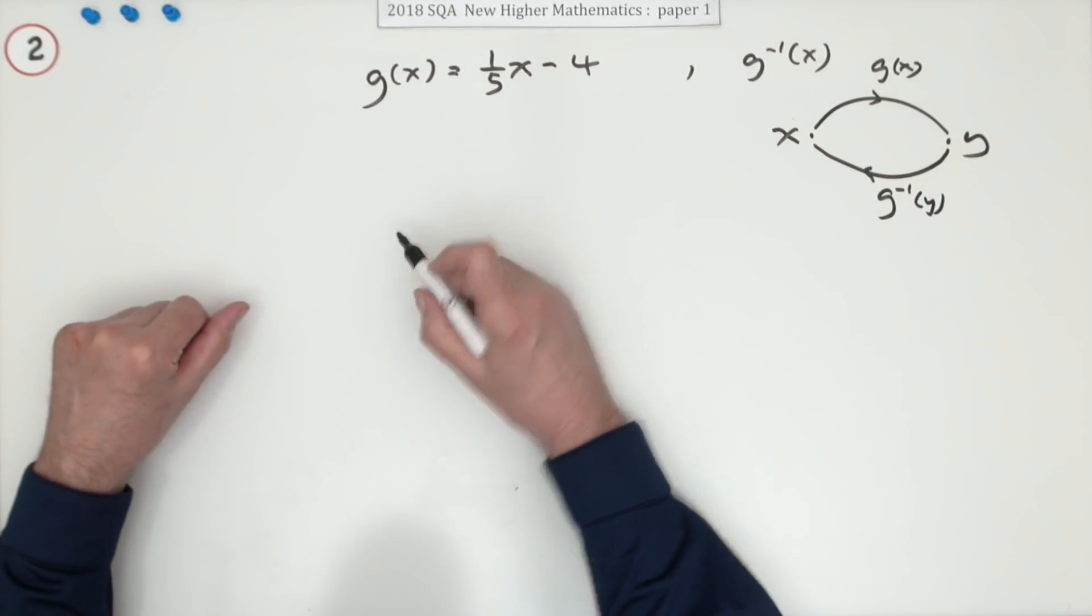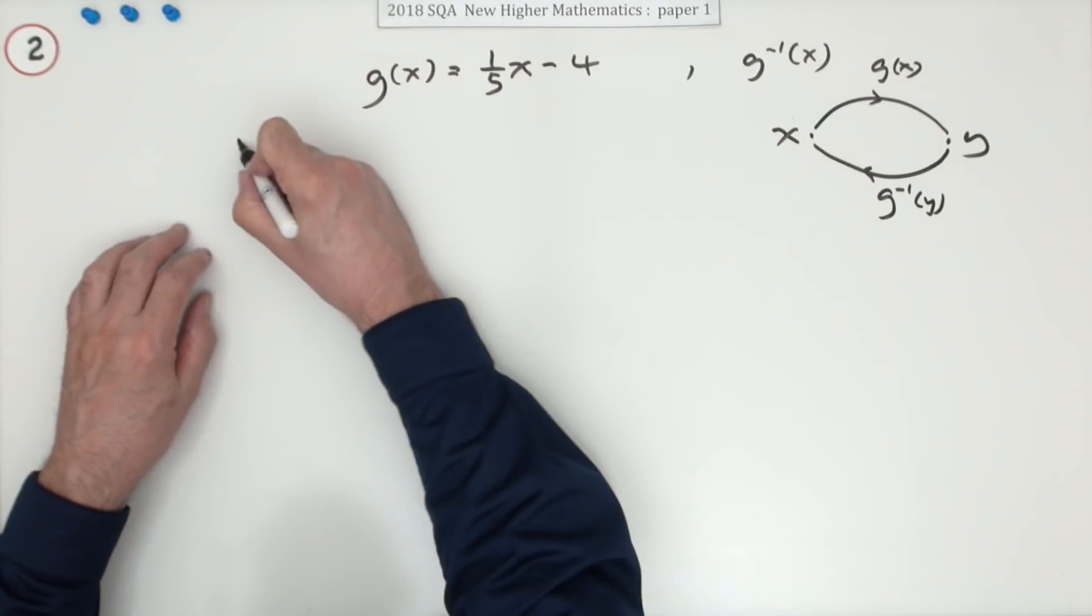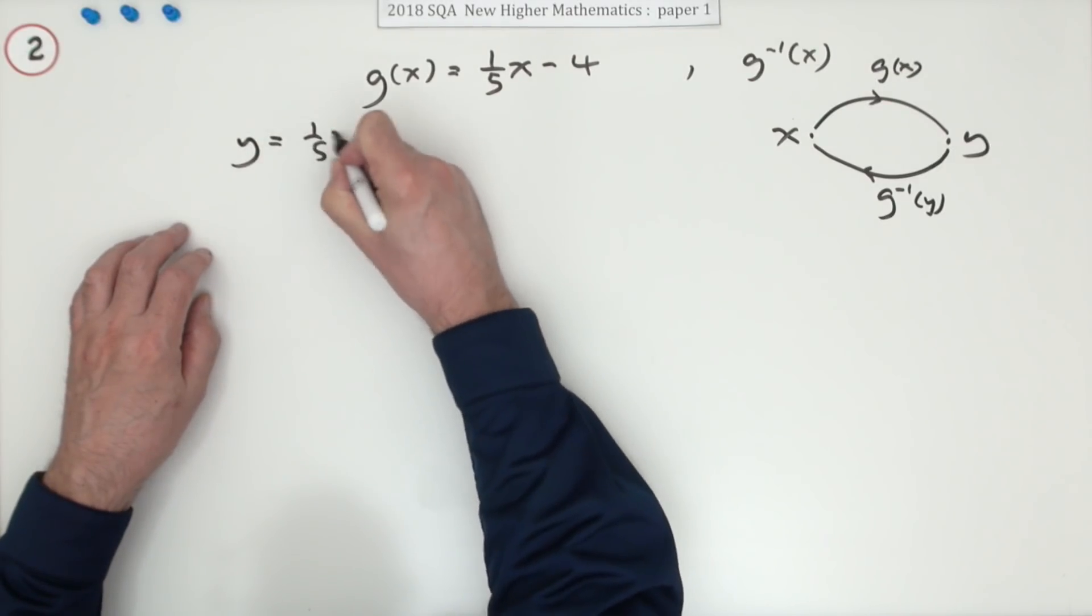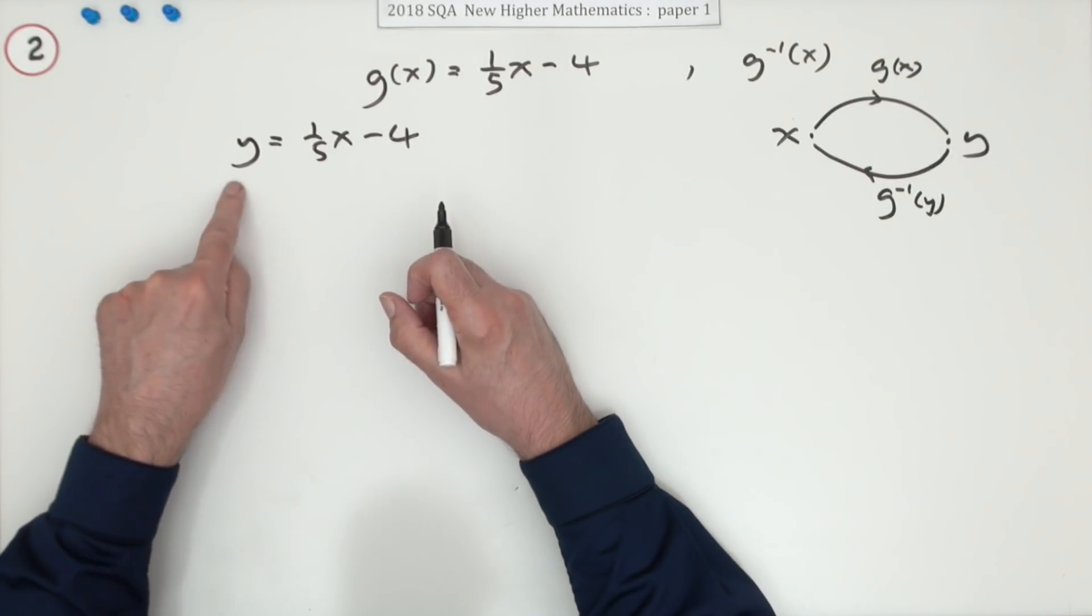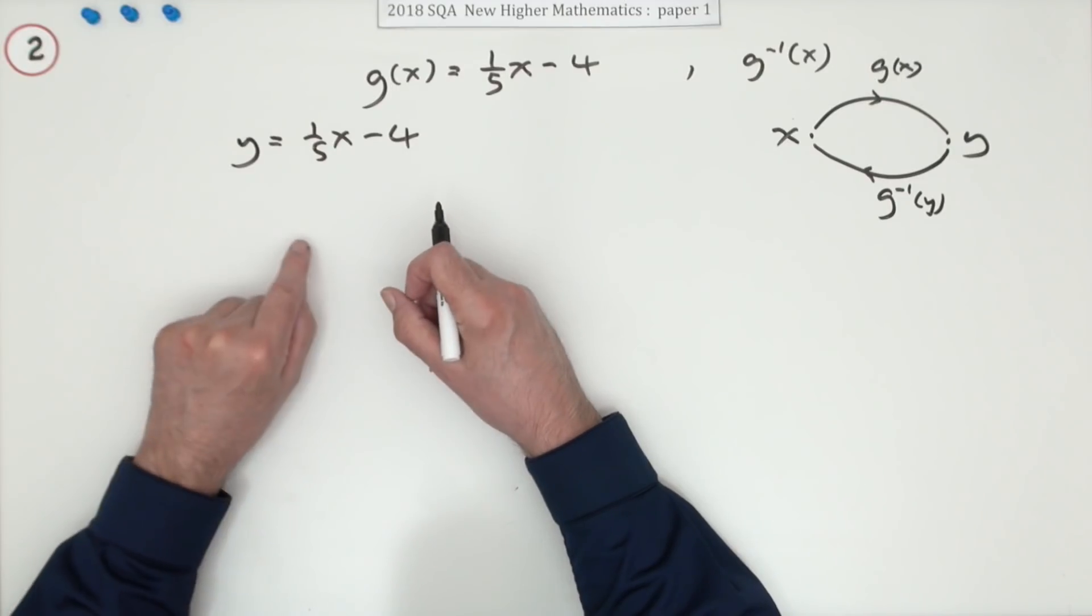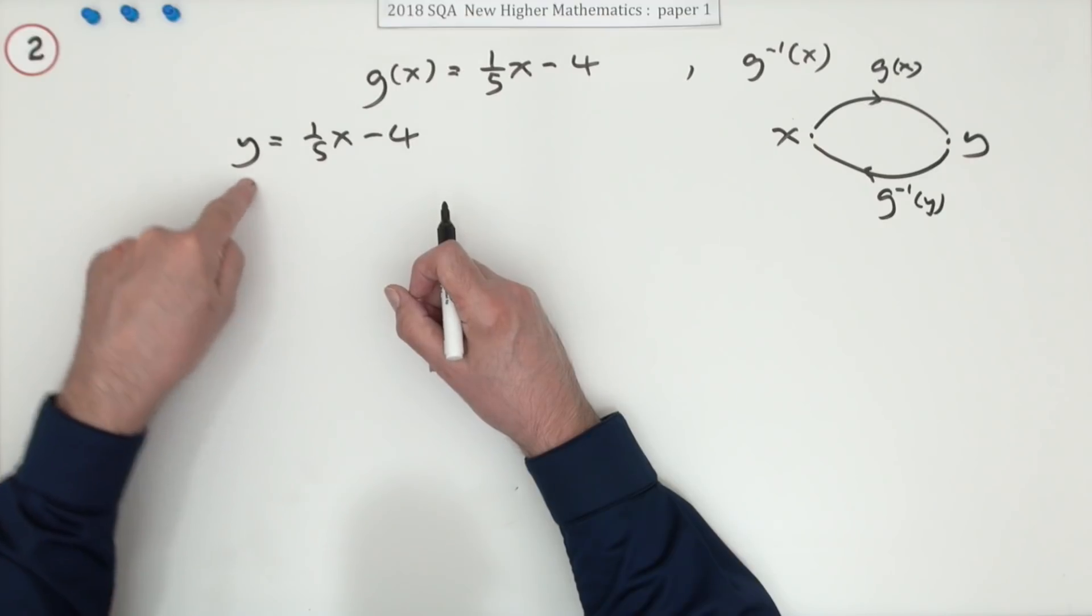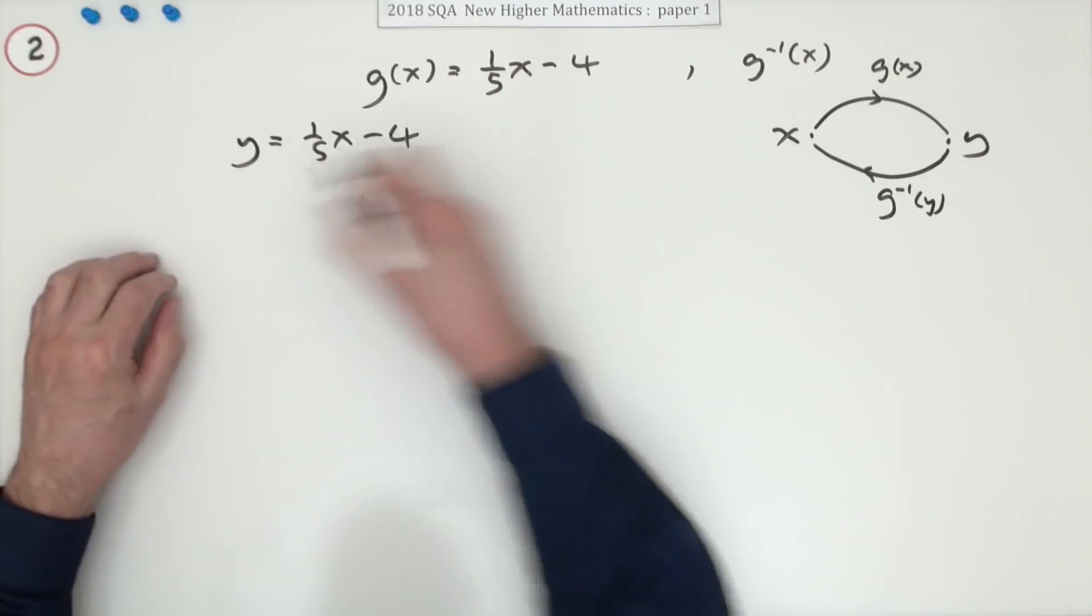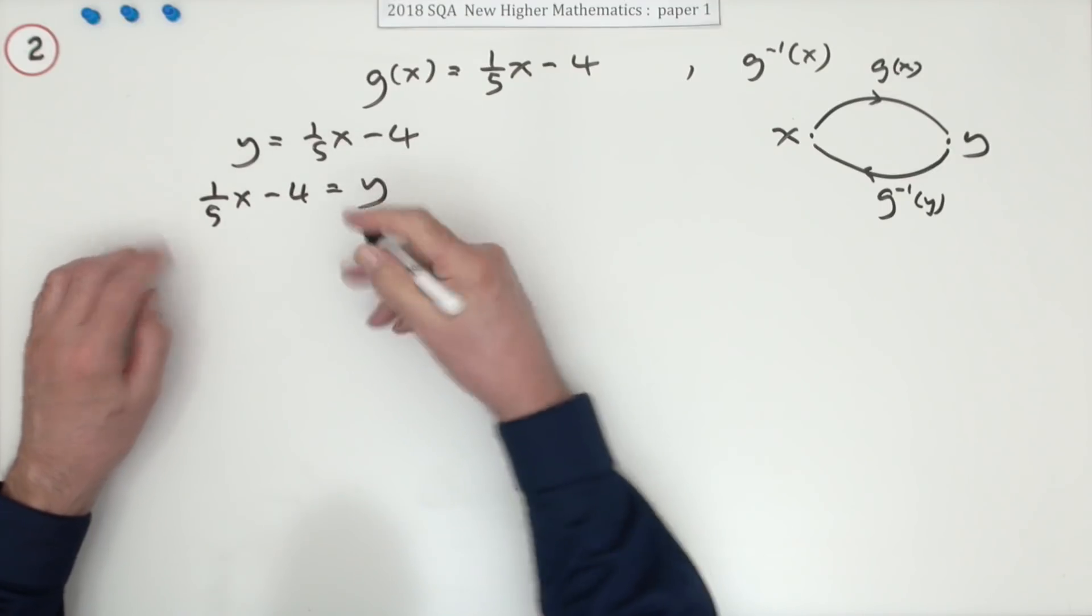So g(x) produces the answer: y equals a fifth of x minus four. What you need to do is rearrange it to read x equals instead of y equals. So instead of having the starting number and working out the answer, I want to put the answer in and get the starting number. Well write it backwards: a fifth of x minus four equals y.